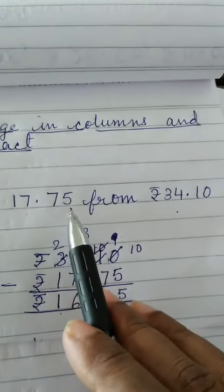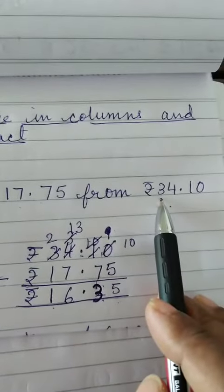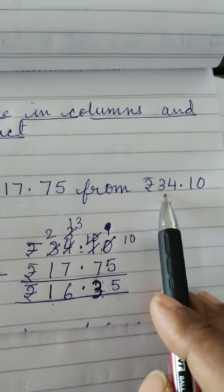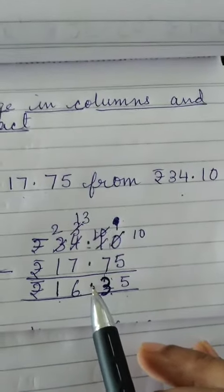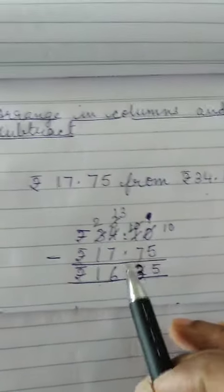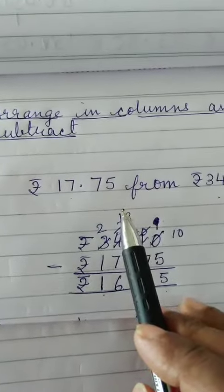Below paise you will write paise, and below rupees you will write rupees. And put the decimal properly. This is how we will do the subtraction by arranging it in columns. Thank you.